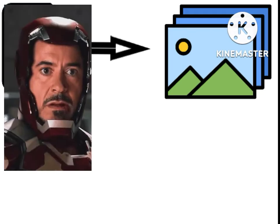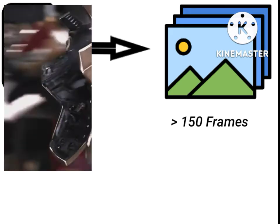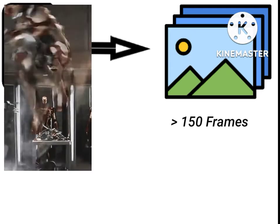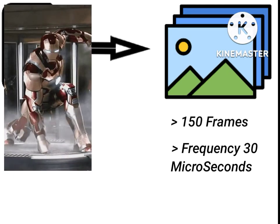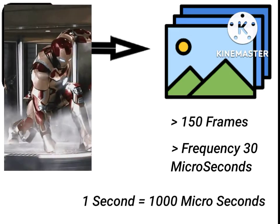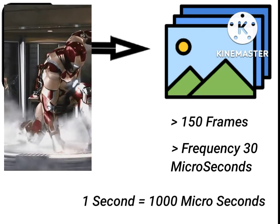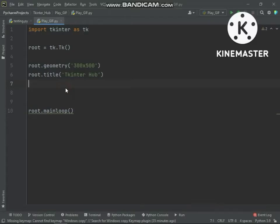In this video we are using this Iron Man animation. This animation has 150 frames and the frequency is 30 milliseconds — each frame is interchanging every 30 milliseconds. In the Python program we will extract all frames from the GIF file, then we will get the frequency of the GIF file, and then we will display each frame at the given frequency.